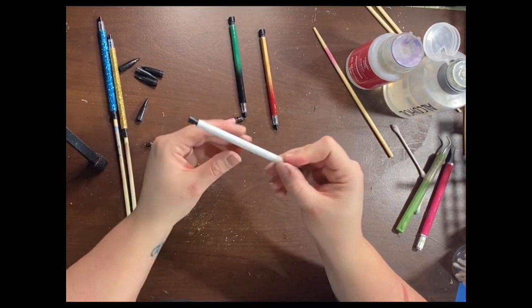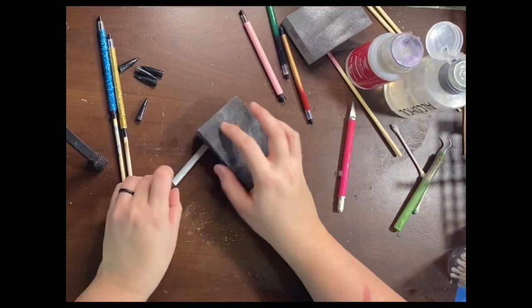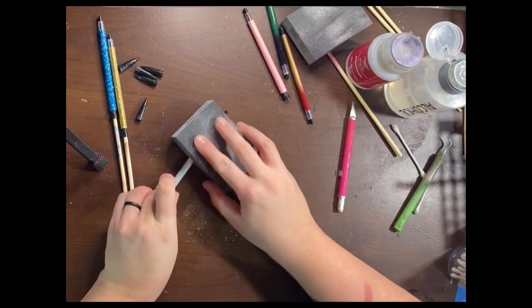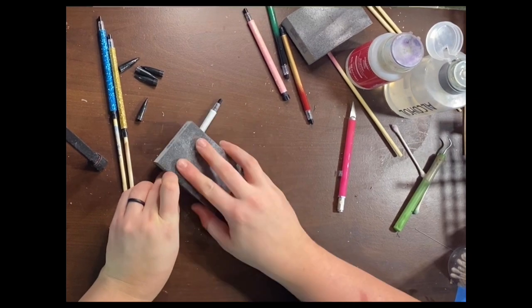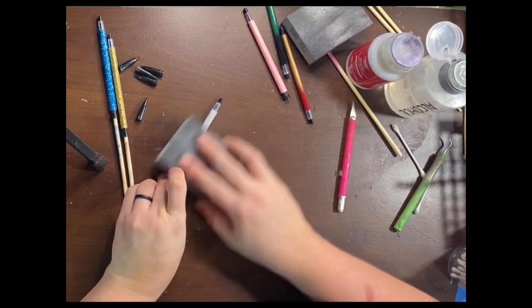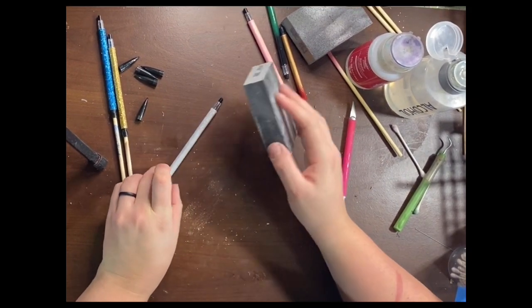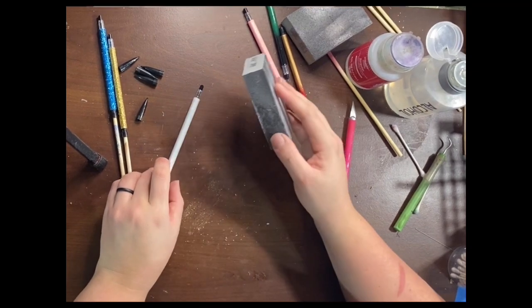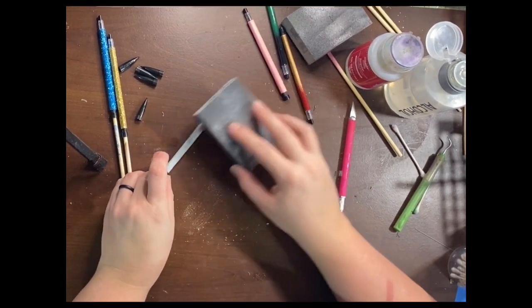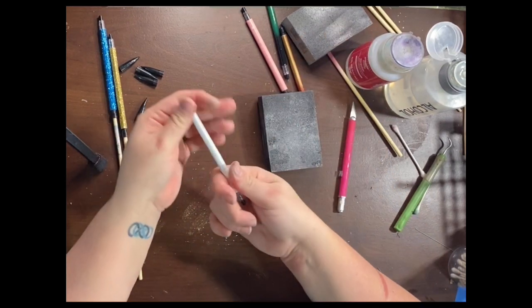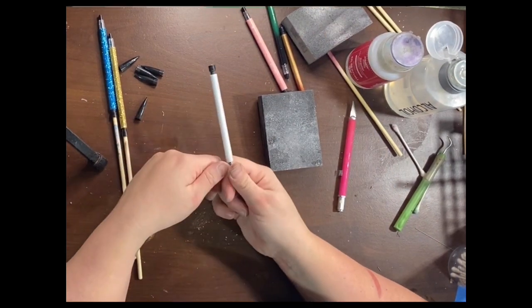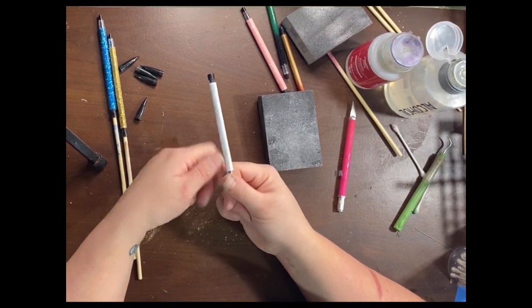Now you're going to need to sand them before you move on. I use an ultra fine sanding block. Before you move on to the next step, if you're using Bright Tone, do not sand until you have at least three to four coats on top of your glitter. You don't want to sand away any glitter.